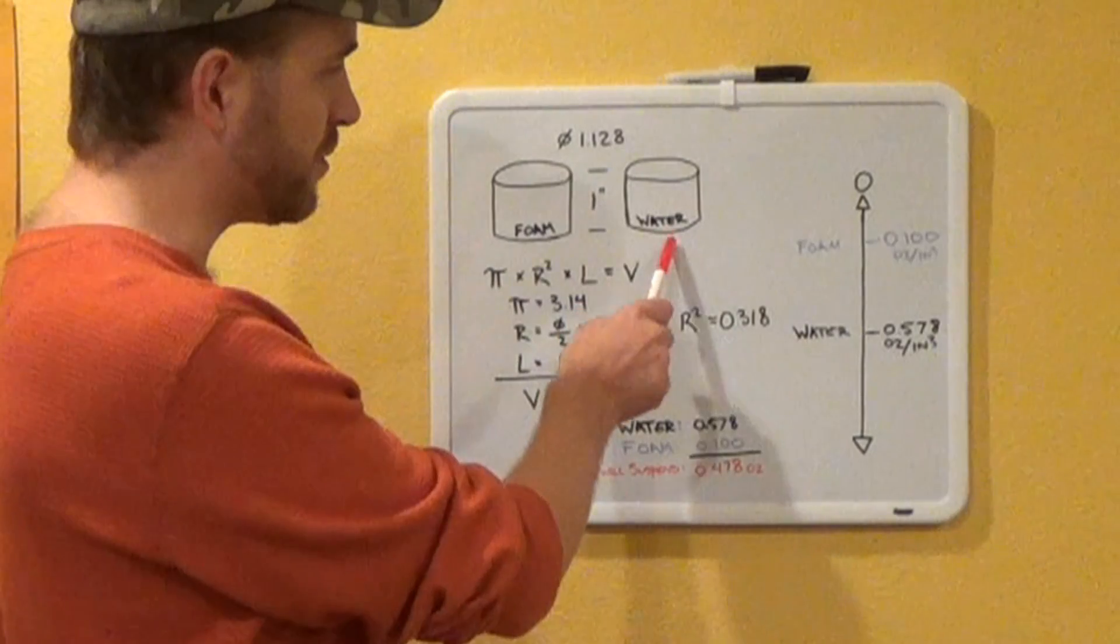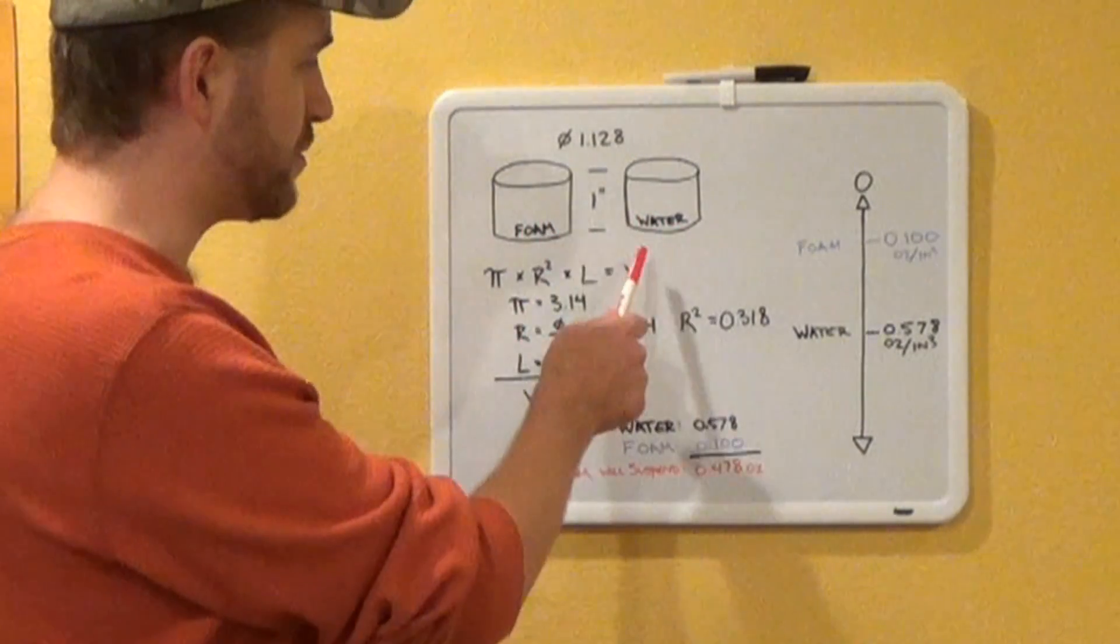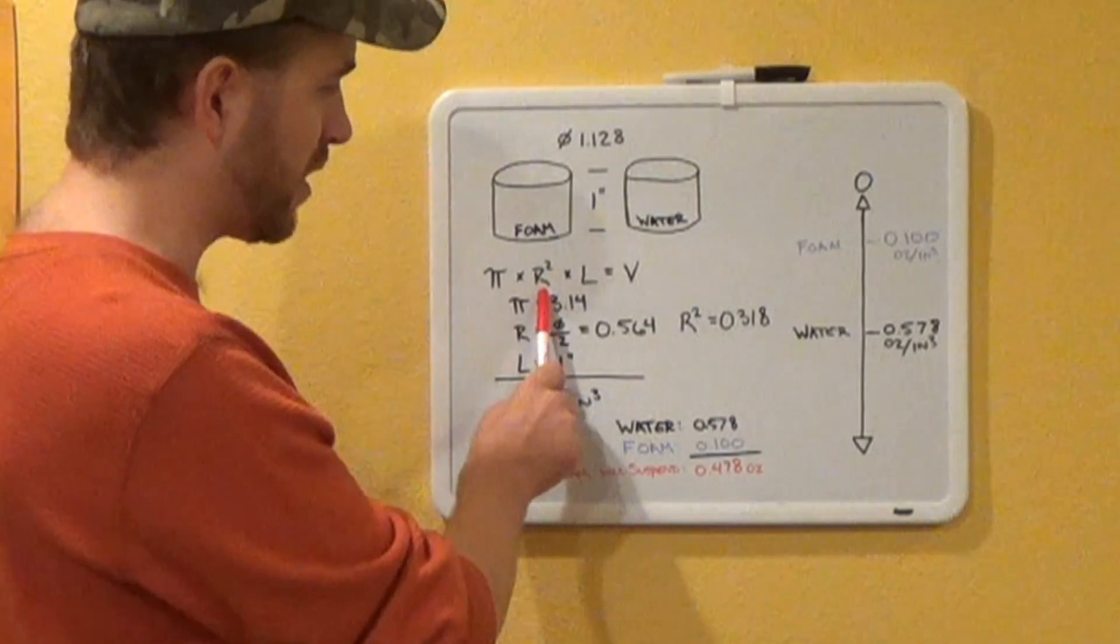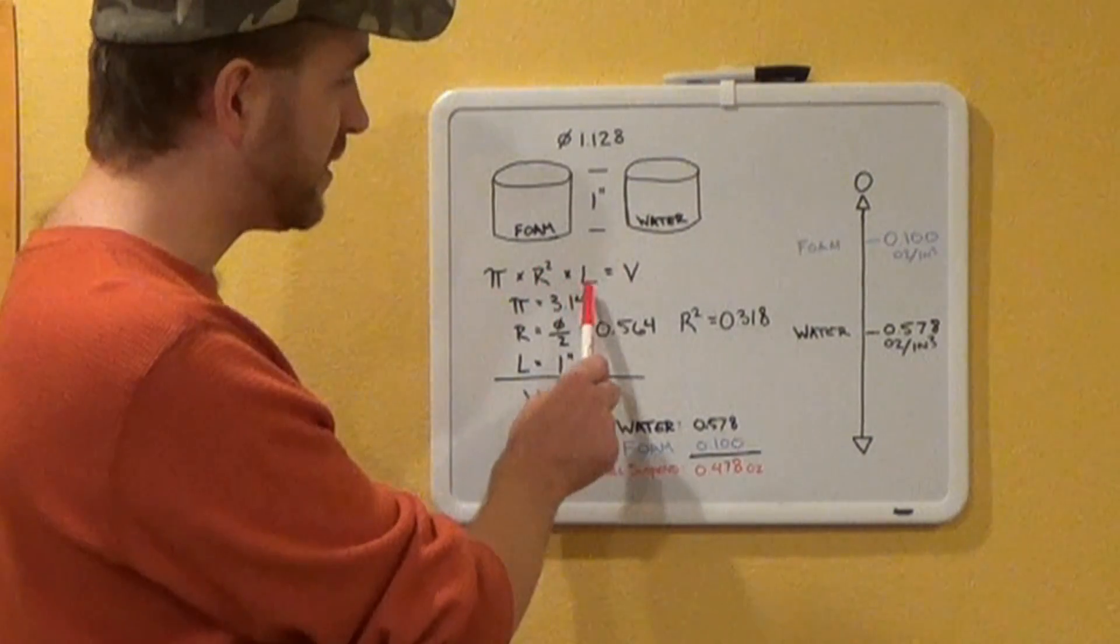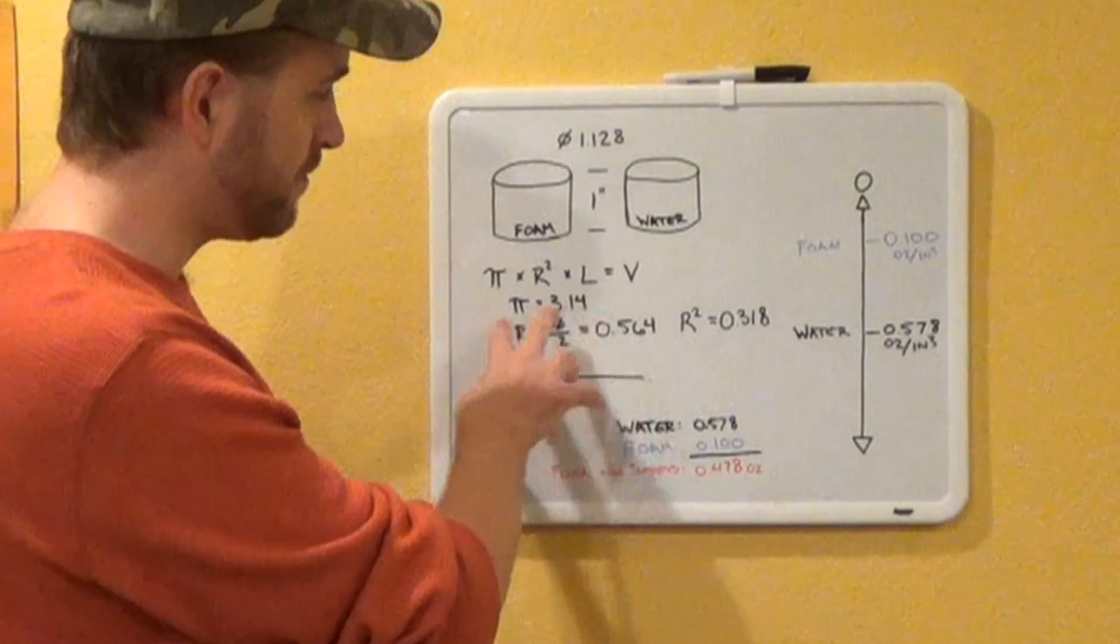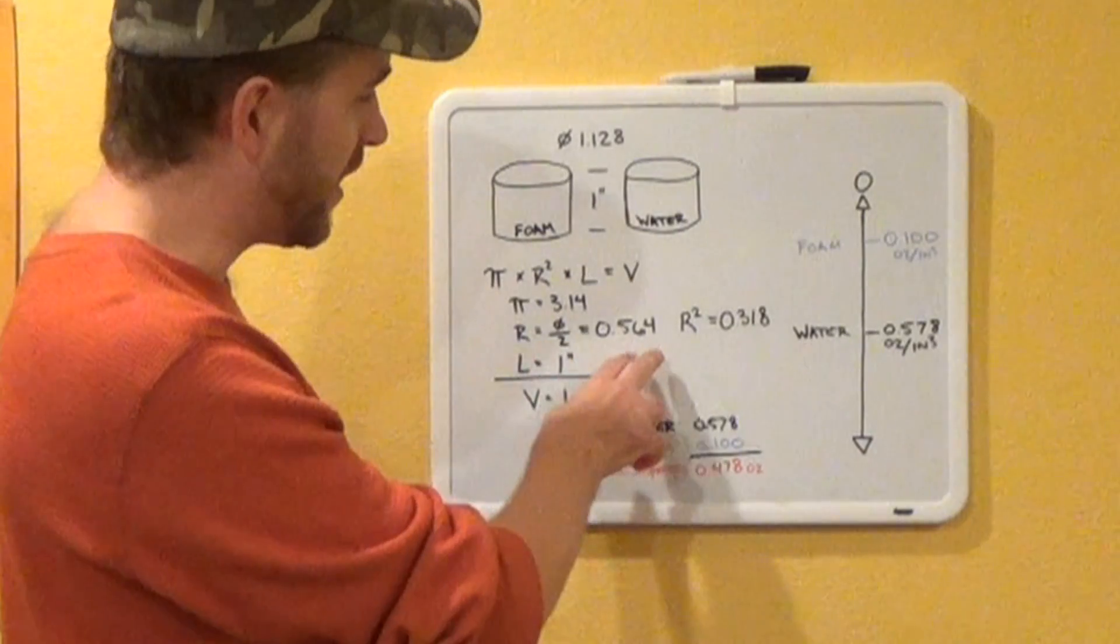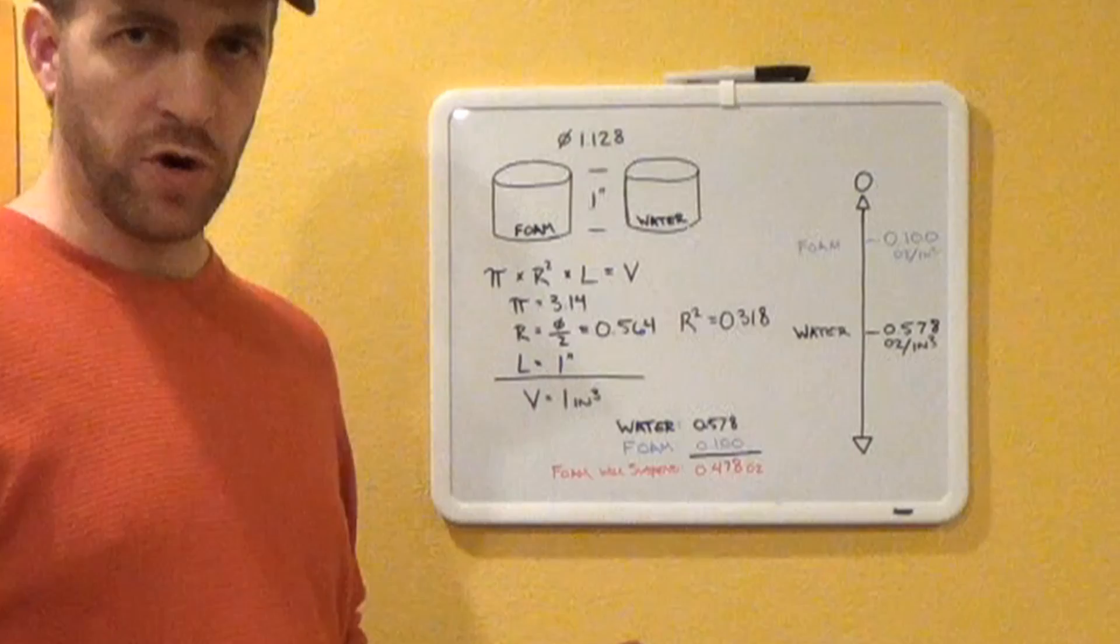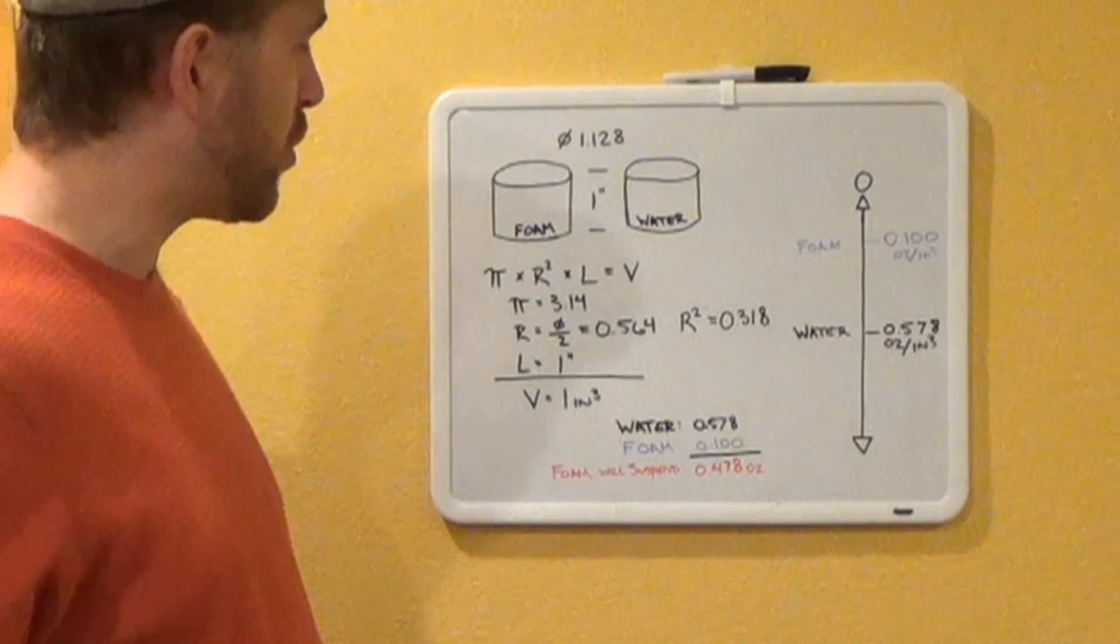Now to figure out our volume of these two cylinders, our equation is π × r² (radius squared) × length, and that gives us our volume. Pi, that's already known, 3.14. And then our radius is 1.128. It's an oddball number, we'll explain why we use that in a moment.